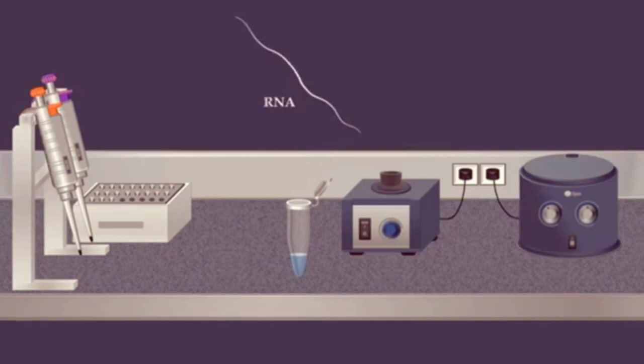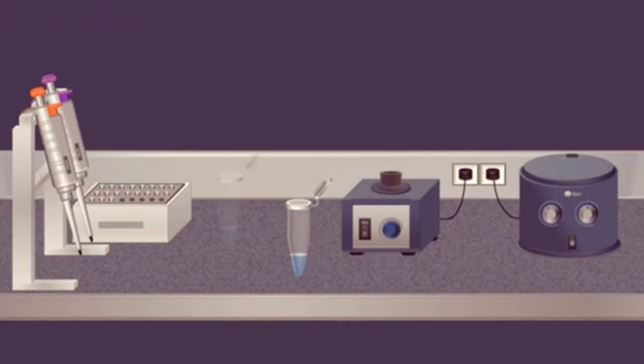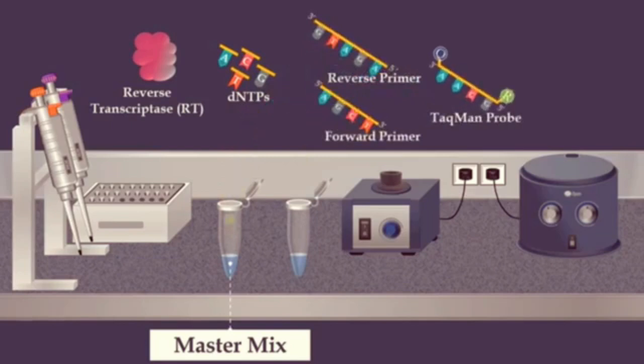After the extraction of the viral RNA, the next step is the preparation of the reaction mixture for PCR amplification. In this step, a master mix is used which is a pre-mixed concentrated solution, that consists of buffer, reverse transcriptase enzyme, nucleotides, forward primer, reverse primer, Taqman probe, and DNA polymerase.